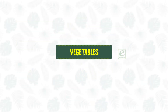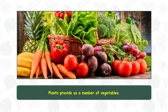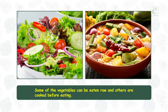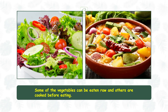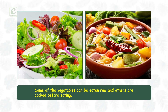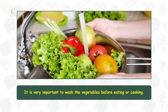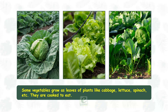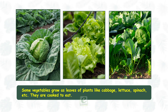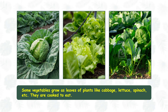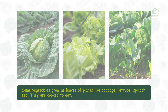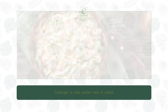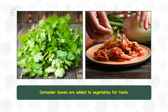Vegetables. Plants provide us a number of vegetables. Some vegetables can be eaten raw and others are cooked before eating. It is very important to wash the vegetables before eating or cooking. Some vegetables grow as leaves of plants, like cabbage, lettuce, spinach, etc. They are cooked to eat. Cabbage is also eaten raw in salad. Coriander leaves are added to vegetables for taste.